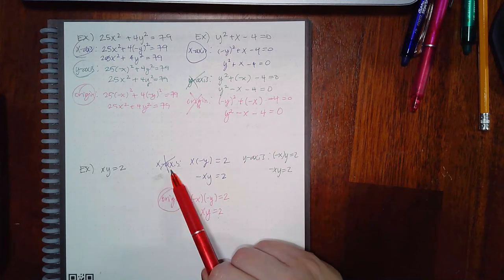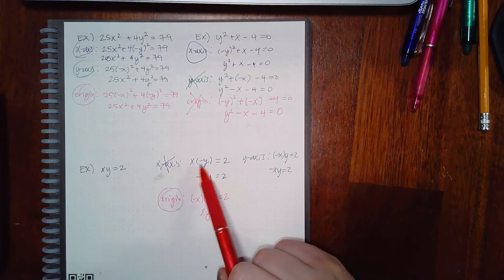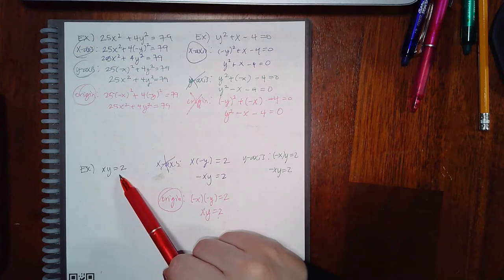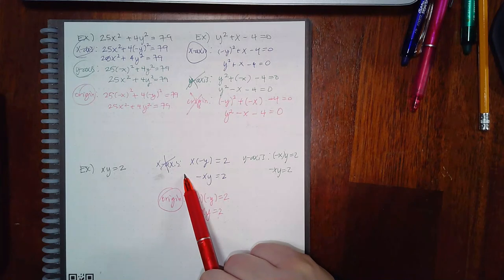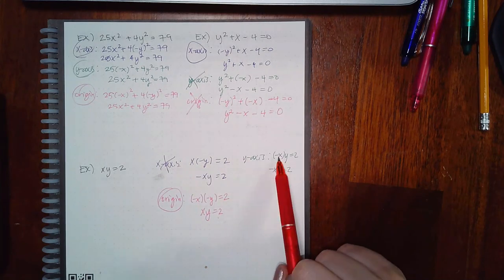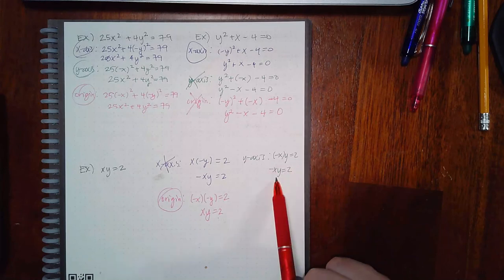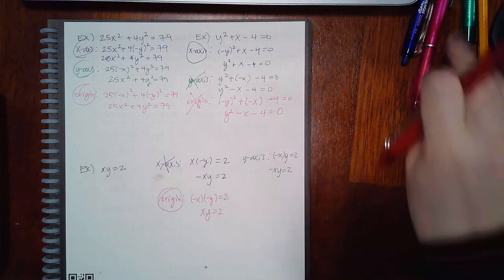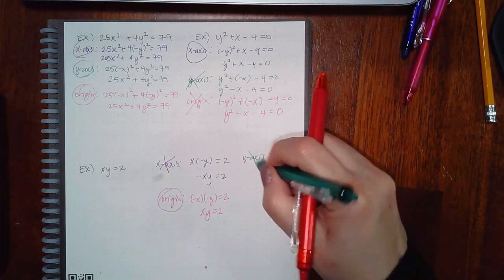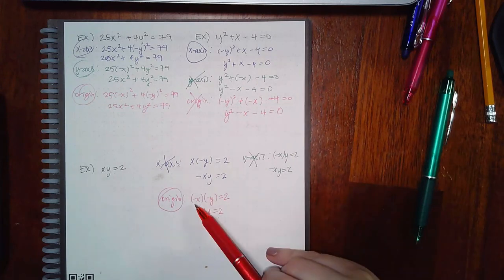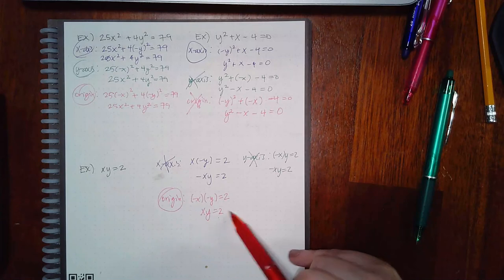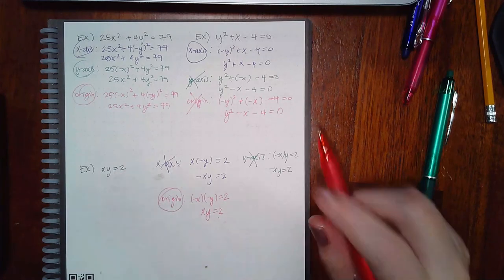For the equation xy = 2: testing x-axis symmetry by plugging in negative y gives negative xy = 2, which is not the same as positive xy = 2 — no x-axis symmetry. Testing y-axis by plugging in negative x also gives negative xy = 2 — no y-axis symmetry. But plugging in both negative x and negative y simultaneously: the two negatives multiply to give positive xy = 2, which does equal the original. So this equation does have symmetry with respect to the origin.